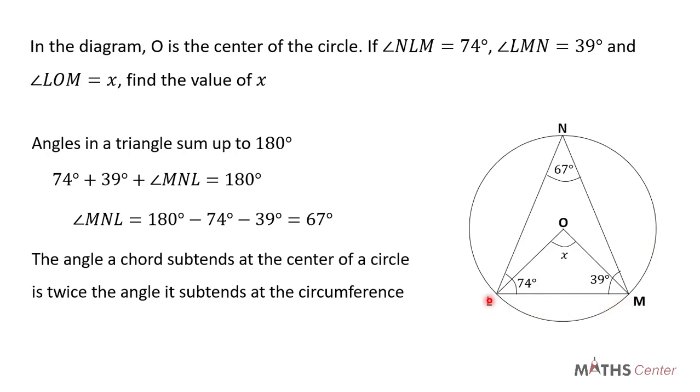If we look at the diagram, we can see that the chord LM subtends the angle X at the center and subtends an angle of 67 degrees at the circumference. The theorem says that the angle the chord subtends at the center is twice the angle it subtends at the circumference.